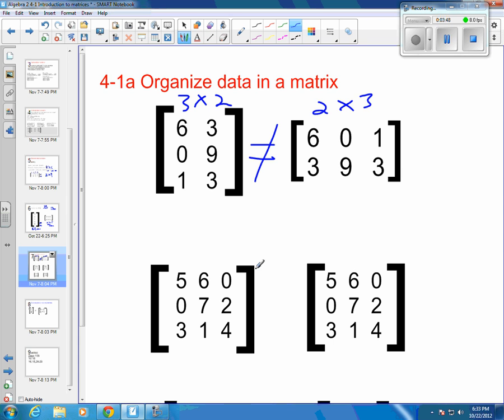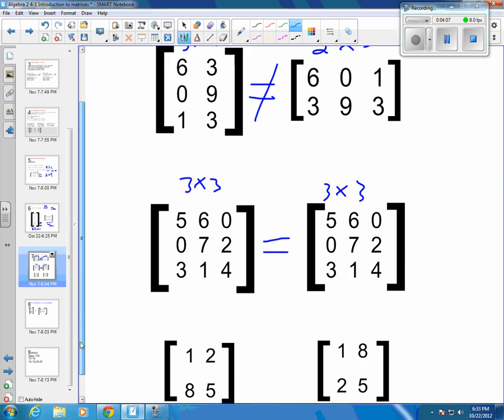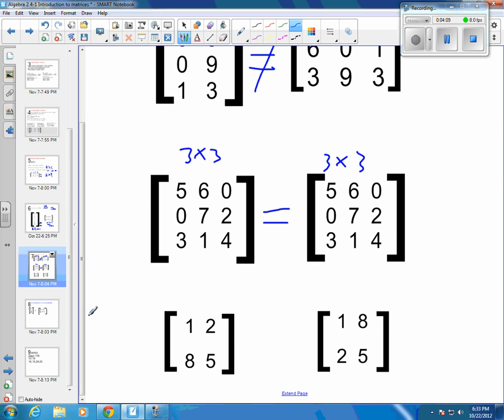0 is 0, 7 is 7, 2 is 2. So 3 is in the same place as 3, 1 is in the same place as 1, and 4 is in the same place as 4. These are both 3 by 3s, and every single element is in the same exact spot. So they are considered equal or equivalent matrices.